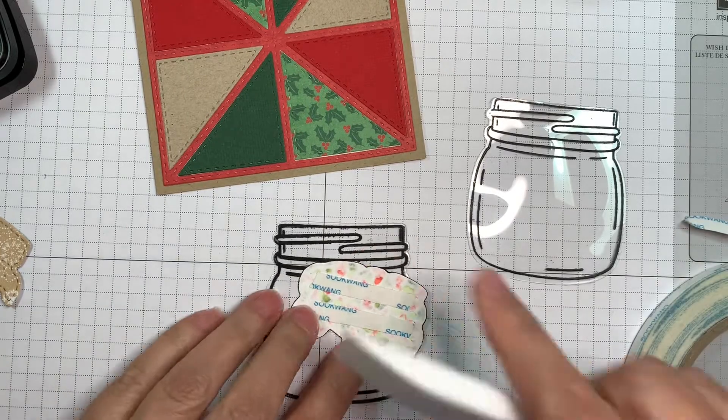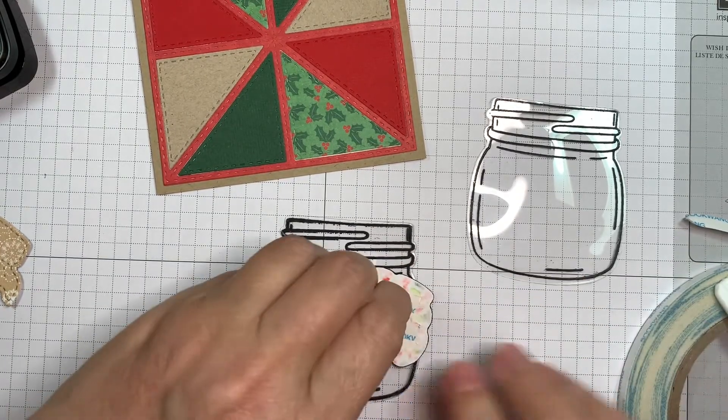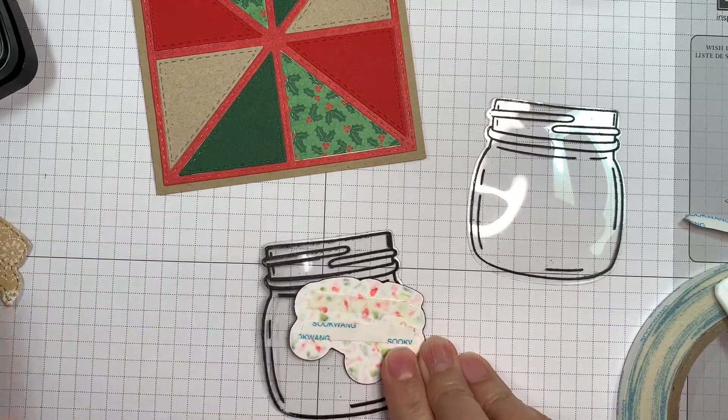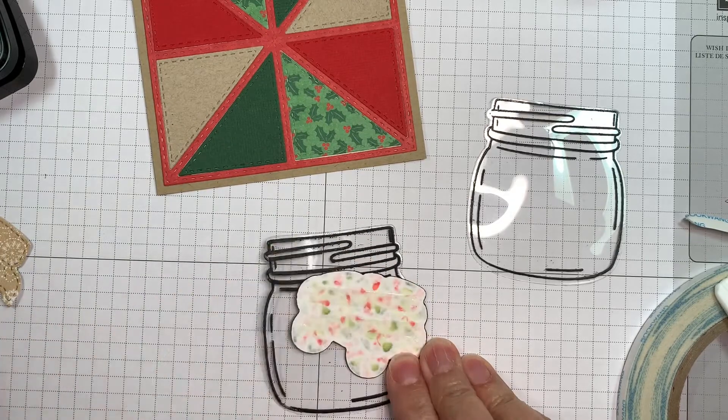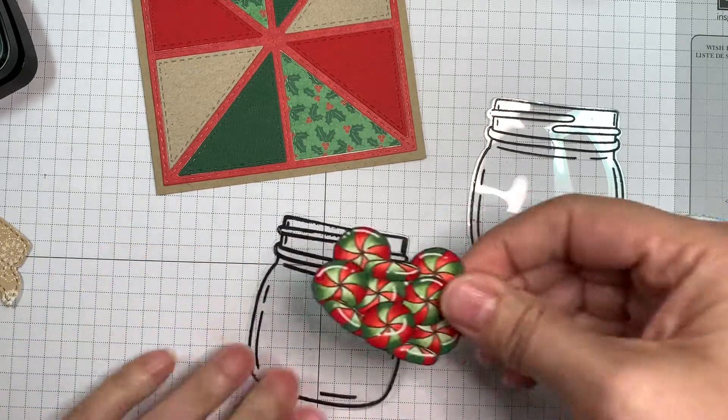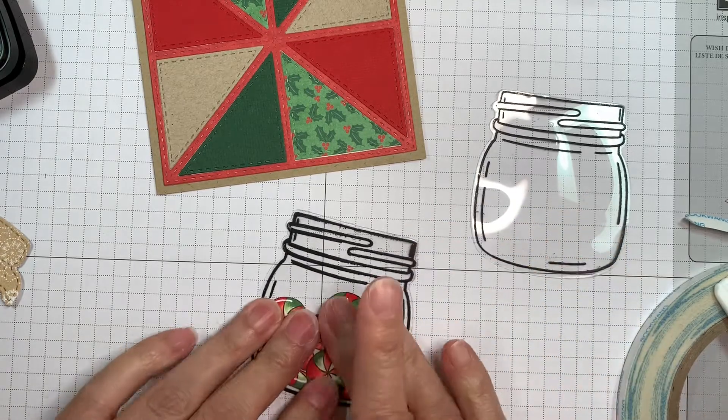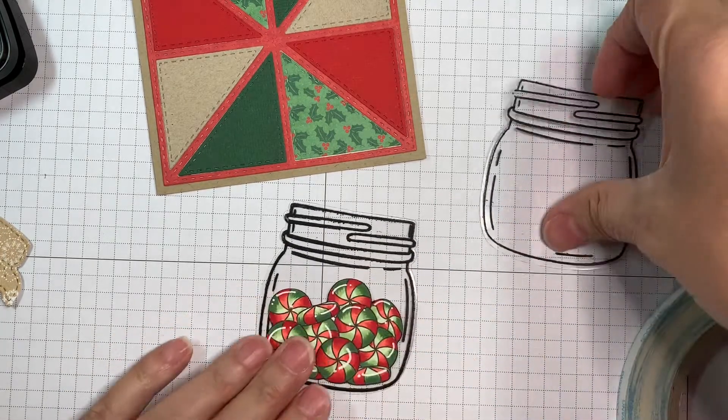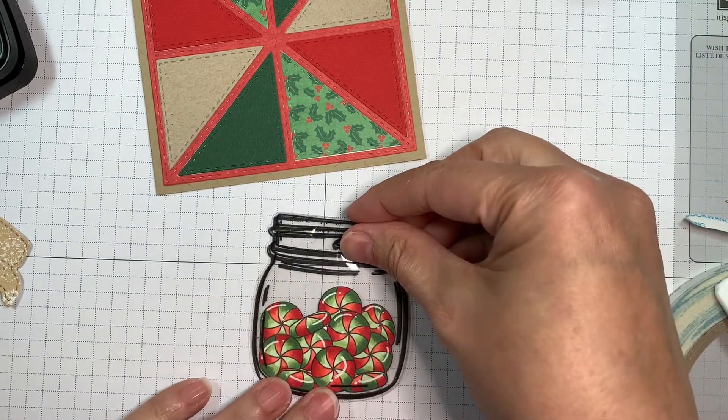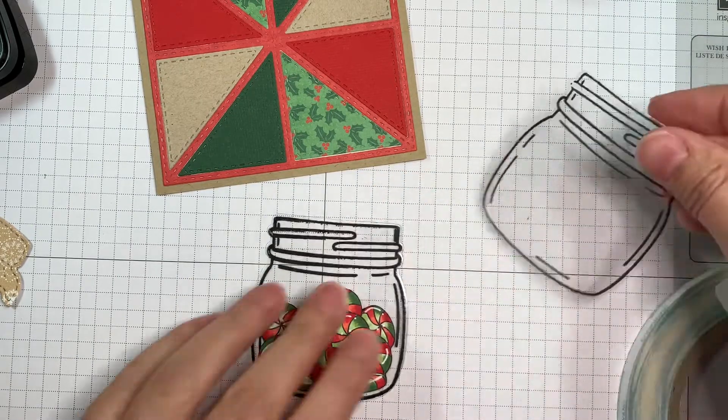So now I am using score tape. I kind of had a brain fart there. I'm using score tape to tape down my little candies inside my jar. So the idea is that it's going to look like it's sitting in the jar itself. Now you could make a shaker, obviously, but I decided to do it this way.